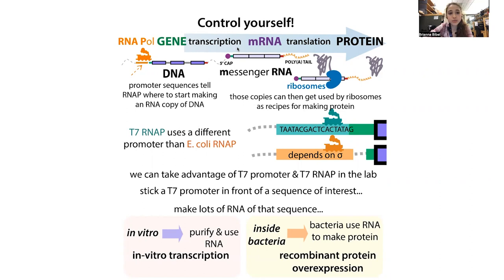For various reasons, you would want to make RNA in a lab — in a test tube, so in vitro — or make messenger RNA inside of a cell and get that cell to make the protein for you. In bacteria, we can get the bacteria to overexpress the protein by controlling when T7 gets made as well as where T7 is going to act.